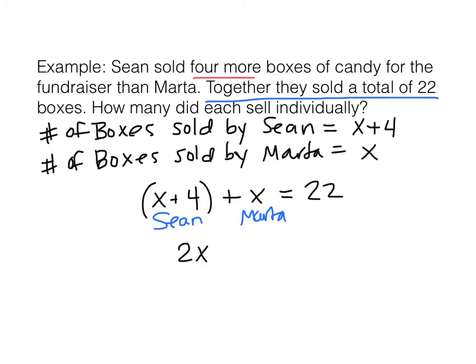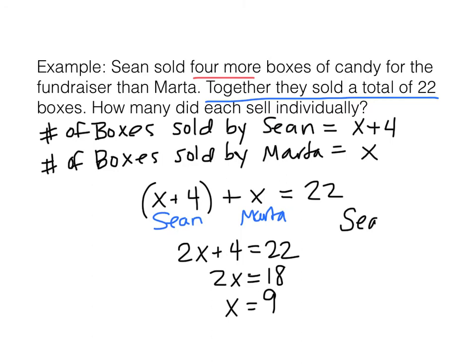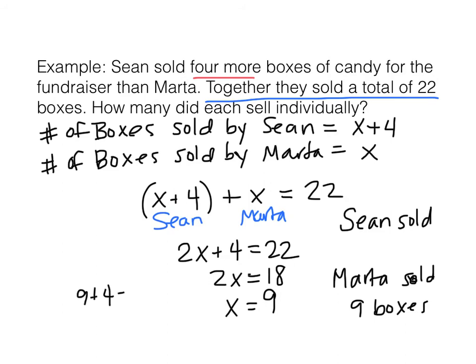Combine like terms: 2X plus 4 equals 22. Subtract 4 from each side — 2X equals 18. Divide by 2 — X equals 9. Marta sold 9 boxes. Sean sold 4 more than that, so Sean sold 13. Even though you might be able to do this in your head, the equation is the deal here. I want you to be able to write the equations because they're not always going to be easy in your head, and you need an arsenal of tools to solve these problems.